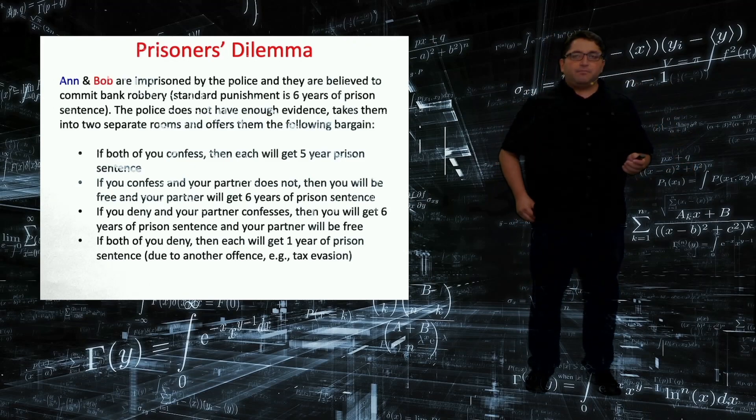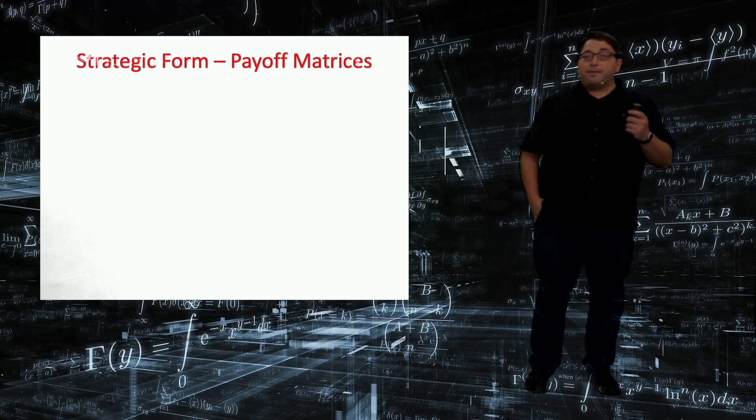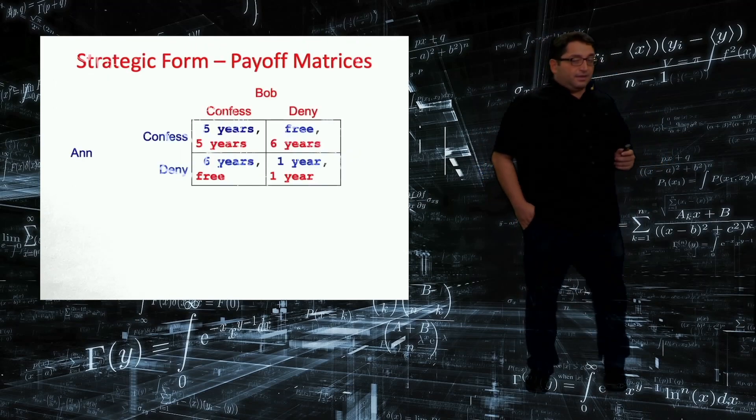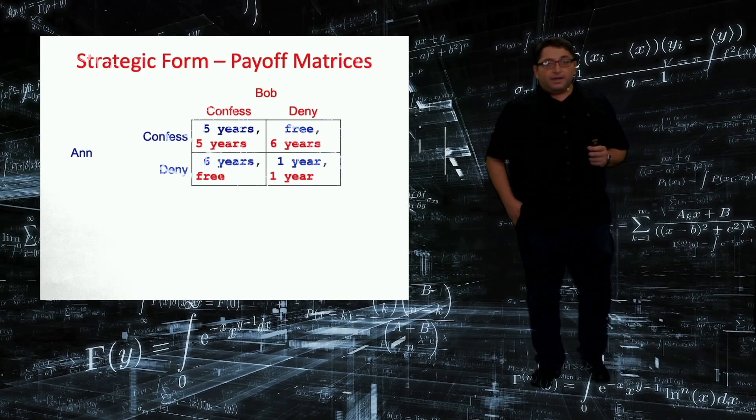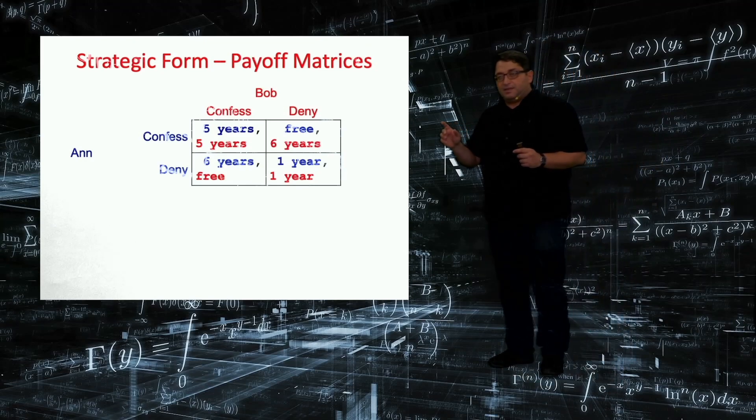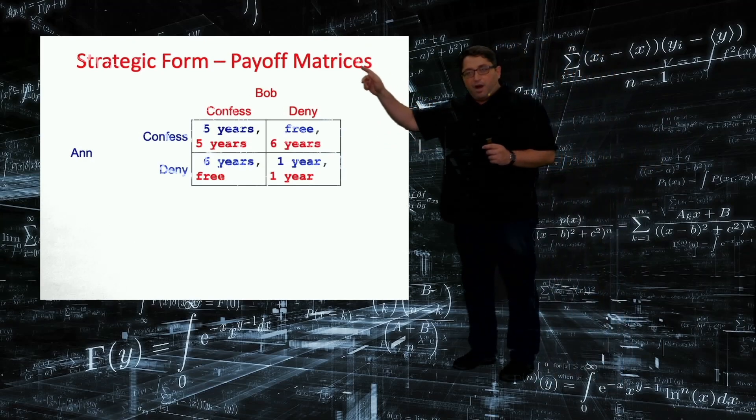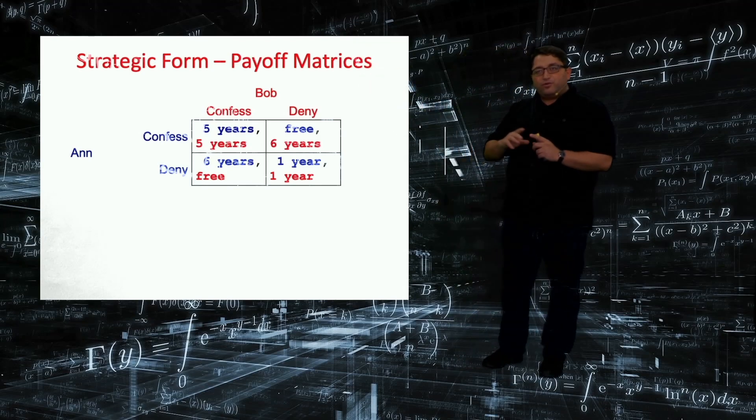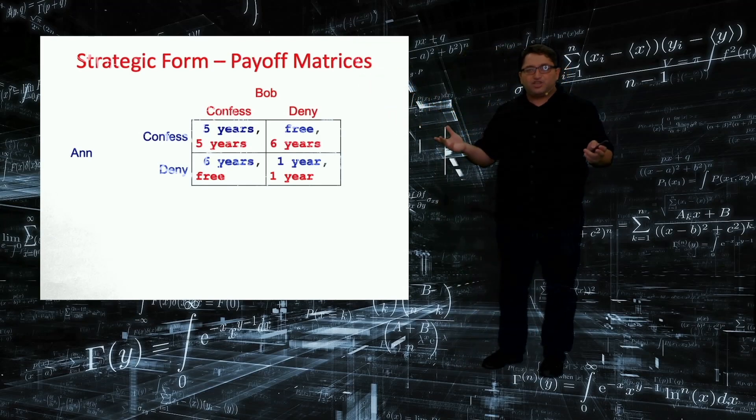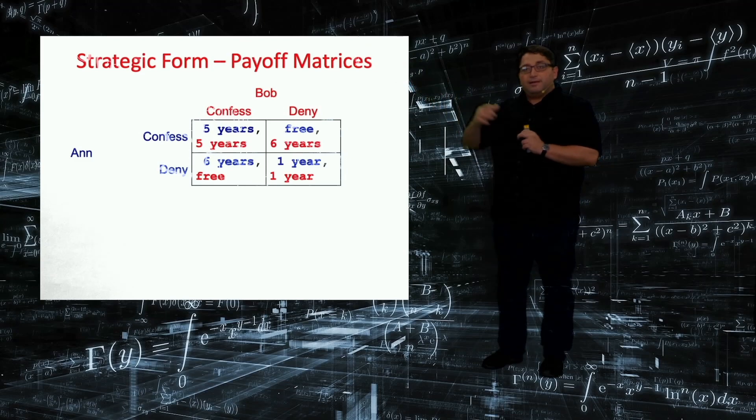So let's translate all of this information into a matrix. Simultaneous games, we are going to study them by payoff matrices. So we have two players, Ann and Bob. The first player is the row player. And throughout the lecture, I'm going to denote it by the color blue. And the second player, Bob, column player, and his actions and payoffs will be denoted by red color.